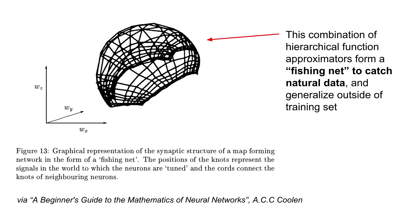Coming back to what I was suggesting earlier: we understand that different layers of a neural network model different explanations on different levels of reality. But as a whole, what a neural network is doing is casting some sort of a fishing net to constrain the data that it sees. For example, if you have a neural network that takes three inputs x, y, and z and you try to model the relationship between these three,